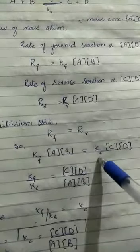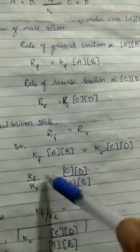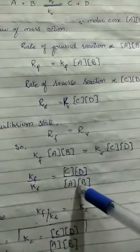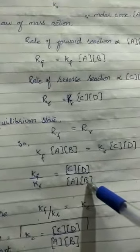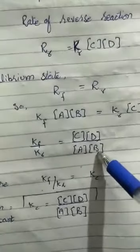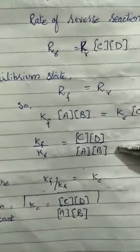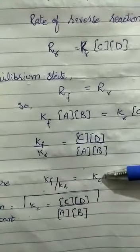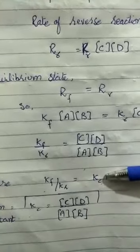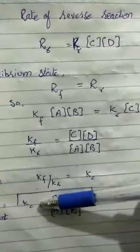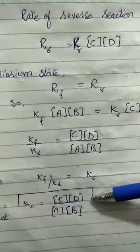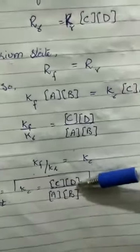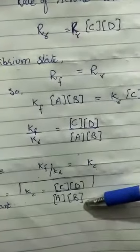Rearranging: kf/kr = [C][D] / [A][B]. We set kf/kr equal to Kc, the equilibrium constant. Therefore, Kc equals the product of molar concentrations of products (C and D) divided by the product of molar concentrations of reactants (A and B).